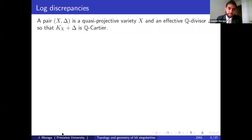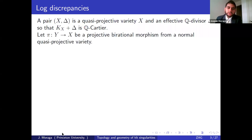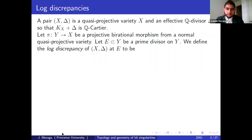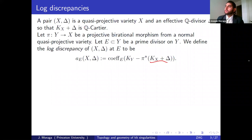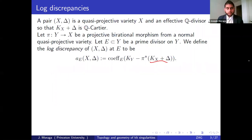We want to measure the singularities of these pairs. We pick some projective birational morphism from a normal quasi-projective variety, pick a prime divisor E on Y, and define the log discrepancy to be a certain number — here we use the fact that K_X plus Δ is Q-Cartier to pull it back. This gadget measures singularities along tangent directions corresponding to E. The larger the log discrepancy, the smoother the point is at that tangent direction.